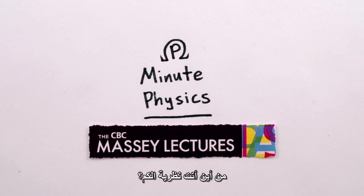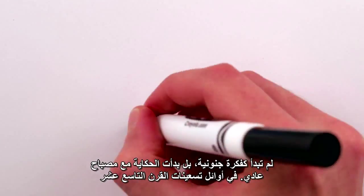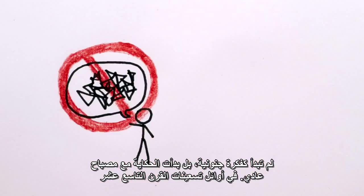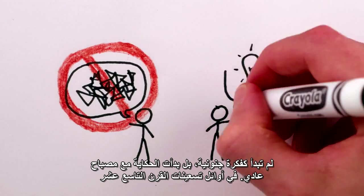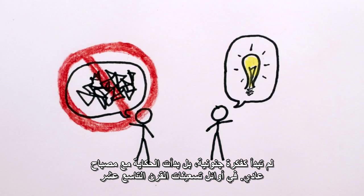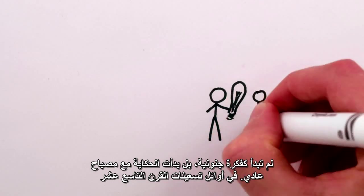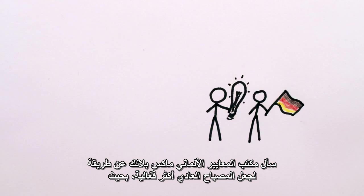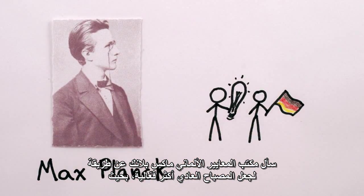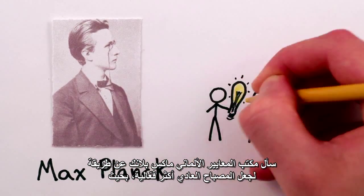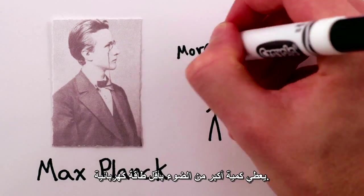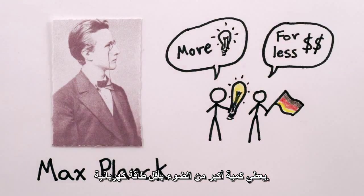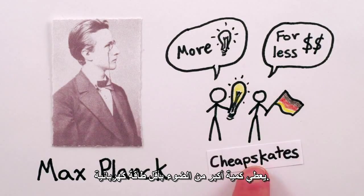Where did quantum theory come from? It started, not as a crazy idea, but with a light bulb. In the early 1890s, the German Bureau of Standards asked Max Planck how to make light bulbs more efficient so that they would give out the maximum light for the least electrical power.